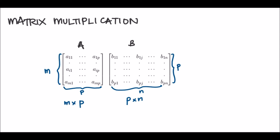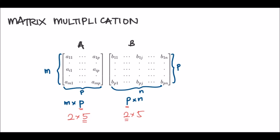These two numbers — the number of columns of A and the number of rows of B — must be the same for the product of these two matrices to be defined. For example, if you have a 3 by 4 matrix and you multiply it with a 4 by 20 matrix, you can find the product because both inner numbers are the same. However, the product is not defined if, for example, you have a 2 by 5 matrix and try to multiply it with another 2 by 5 matrix — one inner number is 5 and the other is 2, so the product is not defined.